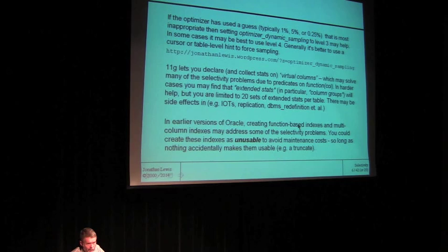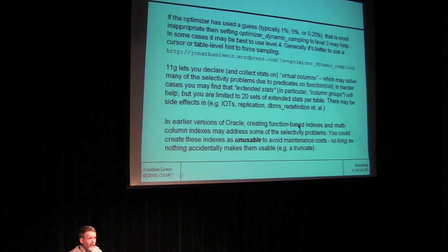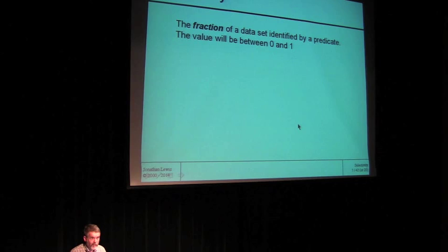If none of these types of solutions actually work — if you find some other reason why the optimizer is doing something silly, like a bug, or it's completely hopeless — then you fall back to hinting. Maybe your hints will be baselines, profiles, outlines, or actually in the code. But starting back there and saying Oracle's doing this because it's making this assumption is a very good starting point — so getting better code, better understanding, and being prepared for what might change on the next upgrade.